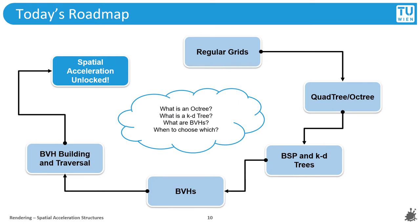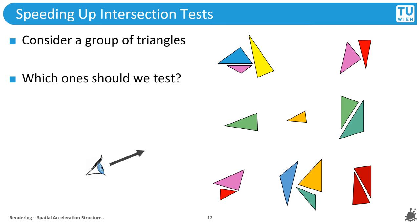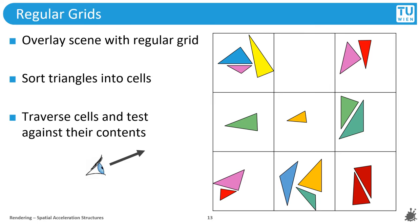This is our roadmap for today, outlining the individual stops on our discovery of viable options for spatial acceleration structures for rendering. First up are the most basic structures: regular grids. We have a collection of triangles and a simple question: how can we reduce the set of triangles that we test instead of testing all of them? The regular grid is simply applied by overlaying the entire scene with a regular grid and then sorting the triangles into the cells they fall into.